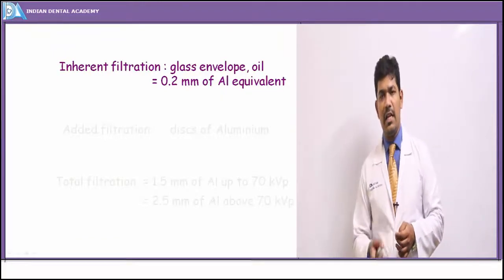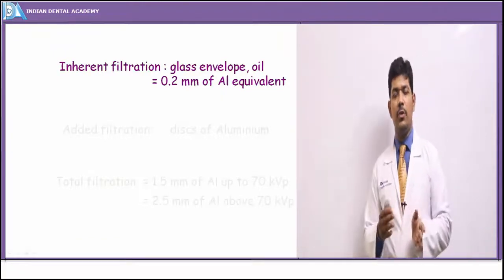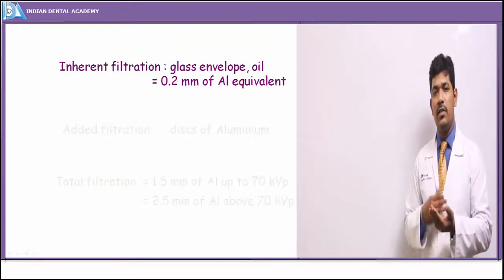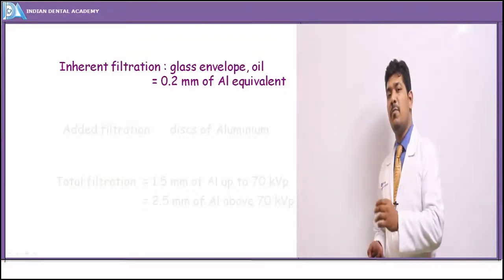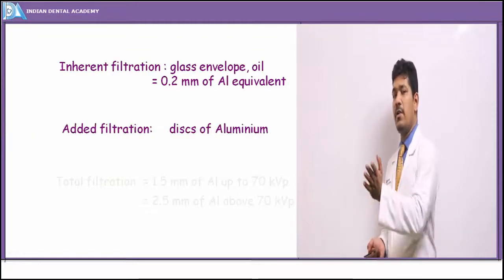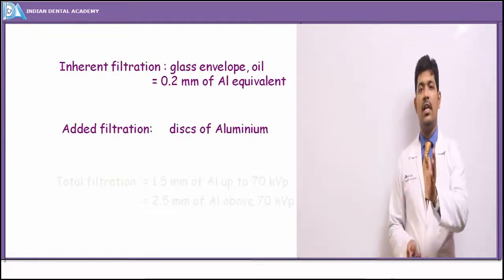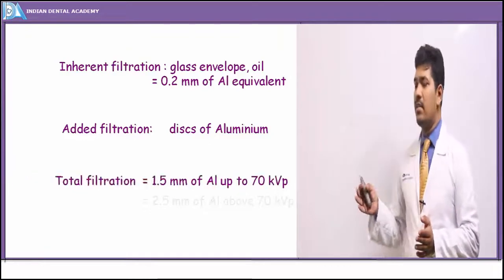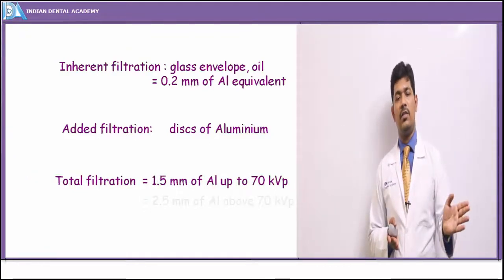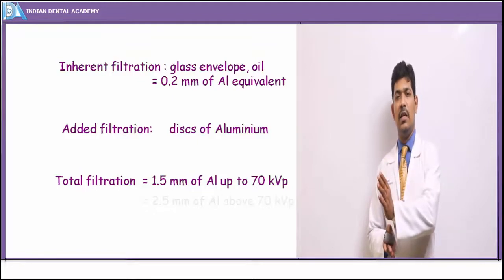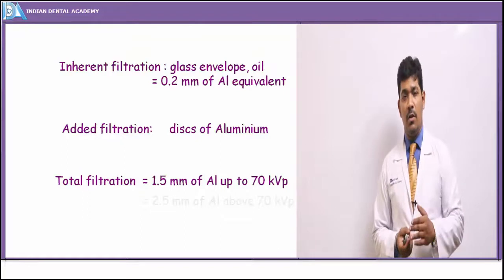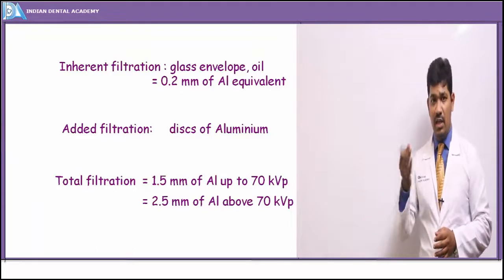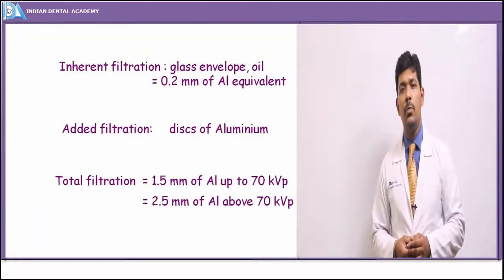Filtration within and outside the x-ray tube is divided into inherent filtration — provided by the glass envelope and insulating oil, equivalent to 0.2 mm of aluminium — and added filtration via an aluminium disc. For intraoral x-ray units operating at around 70 kVp, 1.5 mm of aluminium is used, while for cephalometric and tomographic units operating above 70 kVp (up to 100 kVp), a 2.5 mm aluminium disc is used.